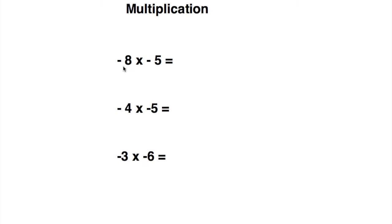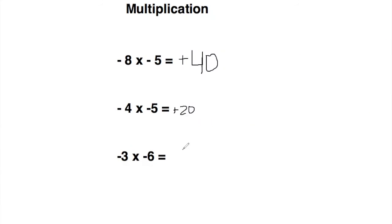Now that you've tried them — you do the same thing here. You know the answer will be positive: eight times five is 40, so the answer is 40. Four times five is 20, so the answer is positive 20 — you don't need to write the positive sign in front, but you can if you want to reinforce yourself. Three times six is 18 — positive 18. And that is how you multiply negative numbers.